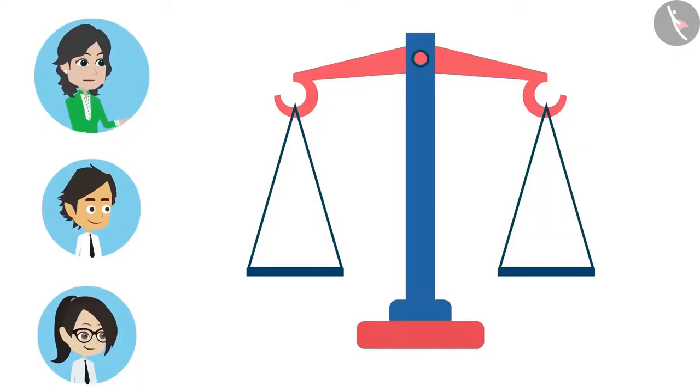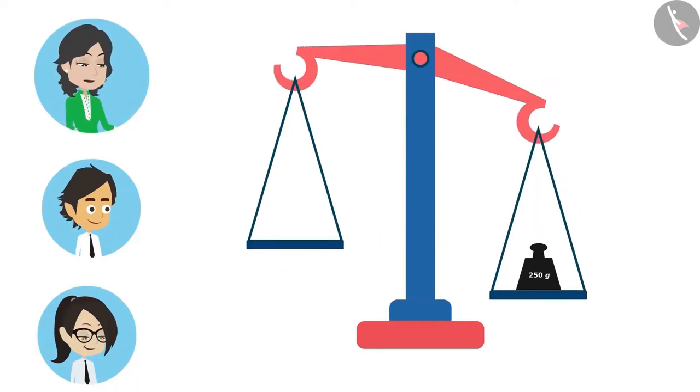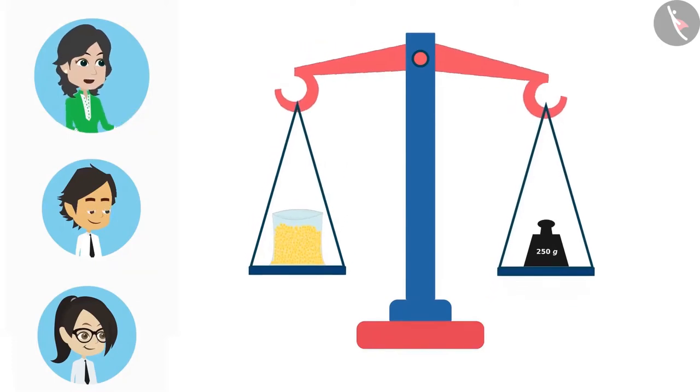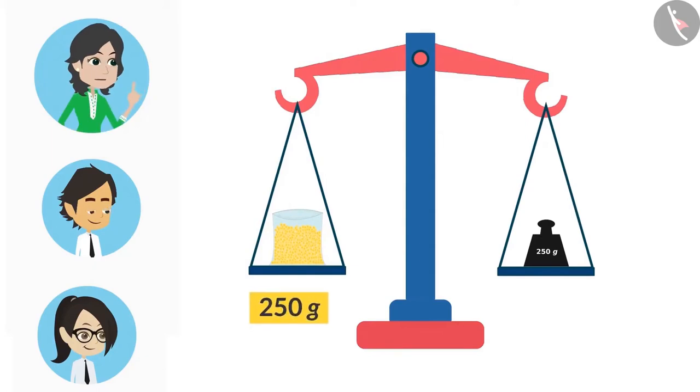For this, we will keep 250 gram weight on one side of the scale and we will keep adding Dal on the other side of the scale till both sides of the scale are balanced. Look, now there is 250 gram Dal on one side of the scale. In this way, we can divide solid objects into equal halves.